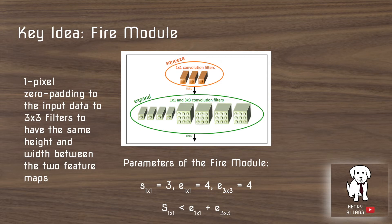They zero-pad the input to the 3x3 filters so that the output has the same height and width as the 1x1 filter output. This is because a 3x3 convolution over a 32x32 feature map produces a 30x30 output. By zero-padding the border, they can concatenate the outputs from all Expand layers along the channel axis.